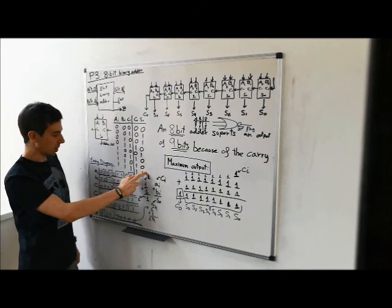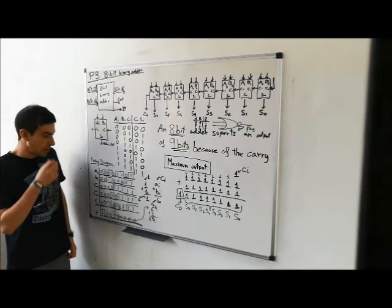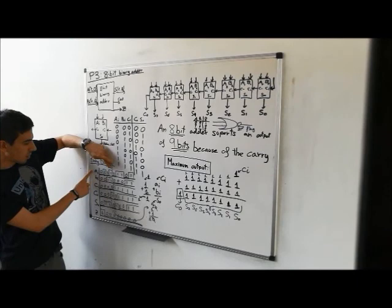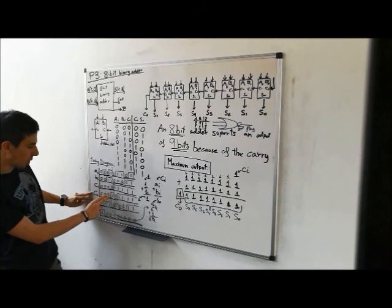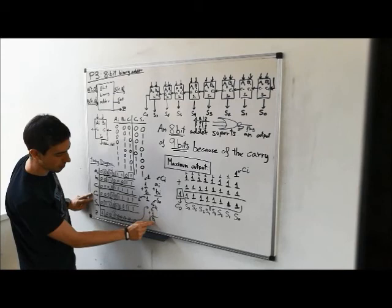Here we have the timing diagram with different examples. Taking a look at the timing diagram, we see that in this example A is 1, B is 1, and carry in is zero. Because of that, the output S is zero and the carry out is 1. We can see: 1 plus 1 is zero, plus carry zero means output zero, and we have a carry out of 1.